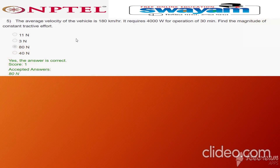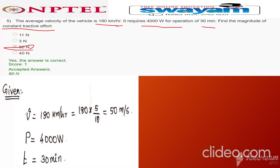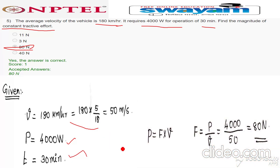Fifth question: the average velocity of the wheel is 180 km per hour and it requires 4000 watts of power for 30 minutes. Find the magnitude of constant tractive force. The answer is 80 newton. Velocity 180 km/h converted to meter per second by multiplying by 5 by 18 gives 50 meter per second. Using P equals F into V, F equals P divided by V, that is 4000 divided by 50, equal to 80 newton.